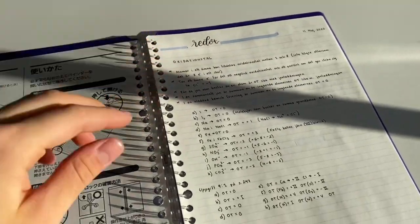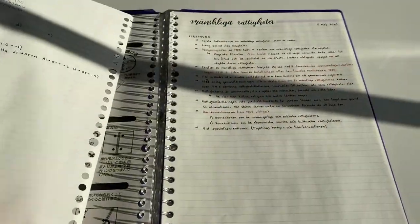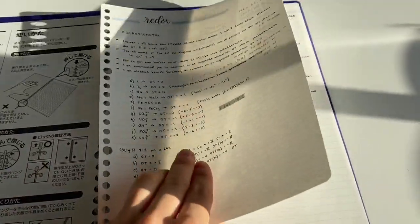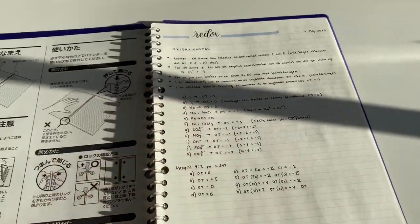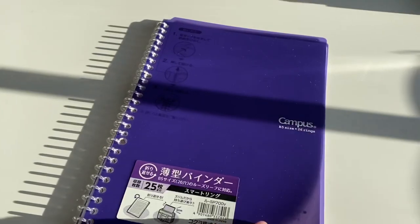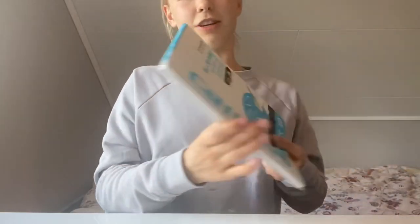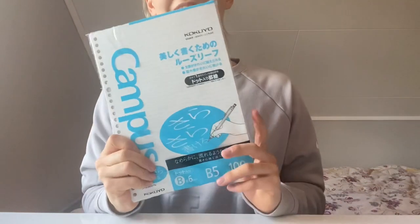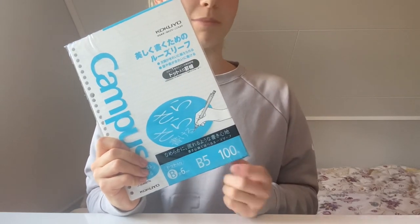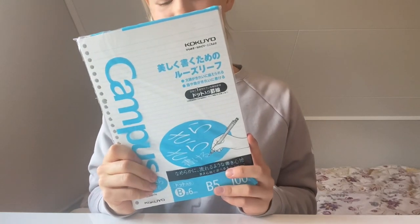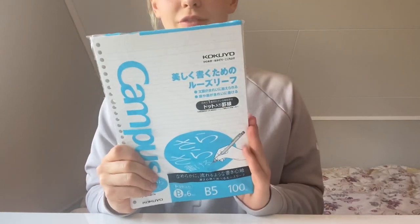I'm really excited to try this thing out. Also, since this notebook only comes with ten sheets of paper, I had to get some loose leaf paper. I got a hundred of them in the size B5 because the notebook's in the size B5. Both of this stuff I got from JetPens.